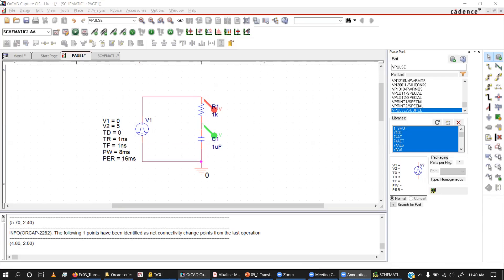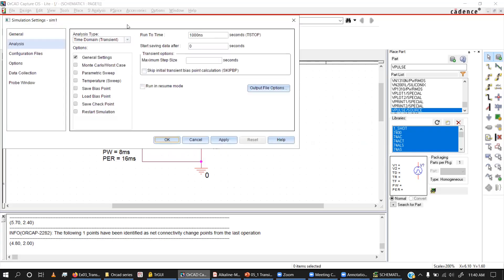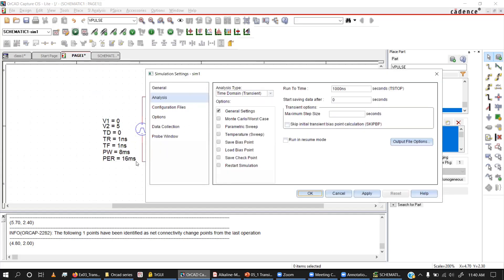Now I'm going to create a simulation profile, a new simulation profile. The profile type we need to pick is time domain or transient analysis, that's the default analysis we want to do. If you remember how we fixed the time period, we fixed it to 16 milliseconds. Just to show the real picture, I'll put maybe 32 milliseconds so we'll be able to see two cycles of this one.